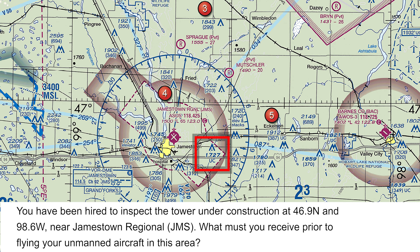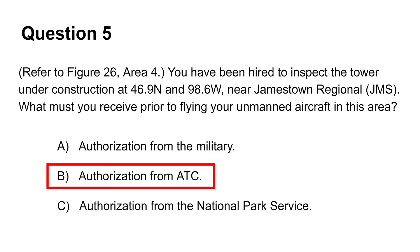While the magenta shaded line means Class E airspace starts at 700 feet above the surface, there is also a dashed magenta line indicating Class E airspace that starts at the surface. The tower legend indicates a height of 1727 feet above mean sea level. It doesn't matter what its height is above ground because we will be operating in controlled airspace with the floor at the surface. Thus the answer is choice B — you need authorization from the ATC of the airport to operate your drone there.